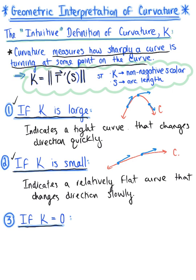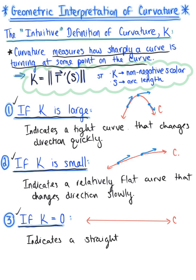Last but not least, what does zero curvature tell us about the curve? Looking at the previous two cases, this tells us that the curve is a straight line. Here is our curve C, and you can see that everywhere on this line we have the same curvature: zero. If curvature measures to be zero, this indicates a straight line for your curve C.